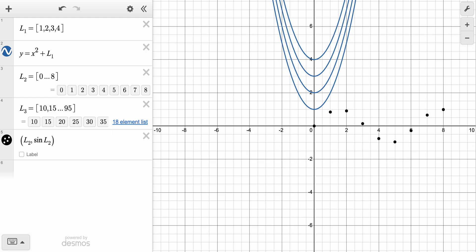The first point is calculated using the first element of L2, which is 0. This is plotted at the point 0 comma sin of 0 and so on for each element of L2.